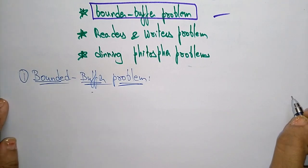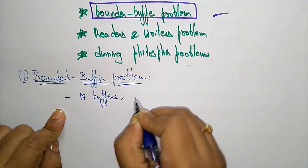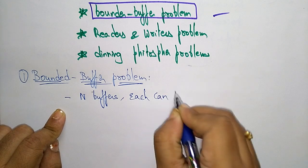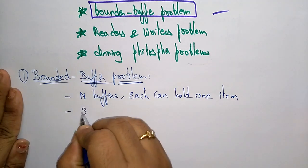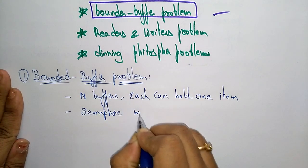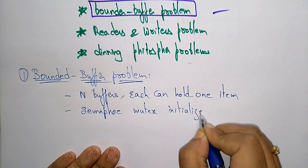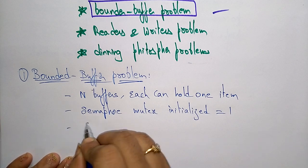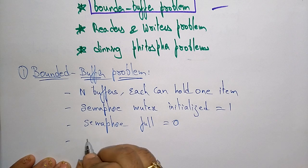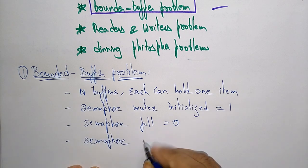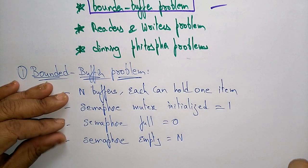In the bounded buffer problem, let us take n buffers, each can hold one item. I am taking the semaphore variable mutex, initialized to 1. I am also taking another semaphore variable full, initialized to 0, and one more semaphore variable empty, initialized to n. These are the constraints we take to solve the bounded buffer problem.